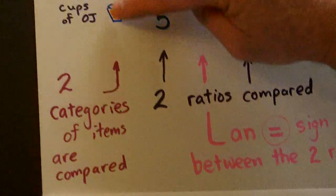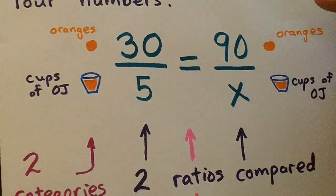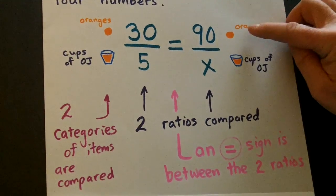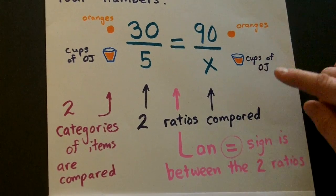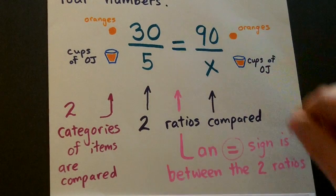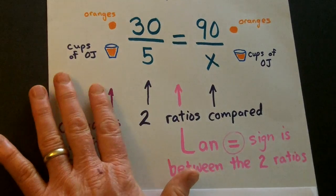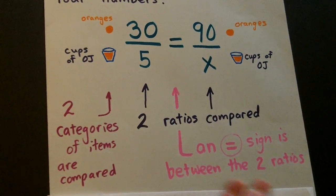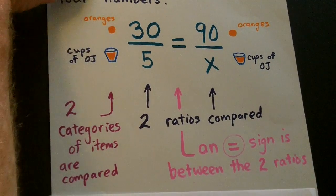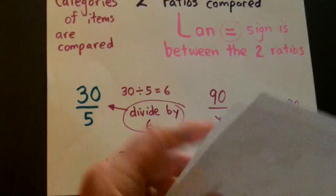Now, right over here are the categories of items that are compared, oranges to cups of OJ. And it's in the same order on both sides, oranges on top, cups of OJ, oranges on top, cups of OJ. Now, these are both ratios that we're comparing with an equal sign. So, we're saying the oranges are about the same size and they're going to make cups of OJ in about the same way. Then we make sure we have that equal sign between them.